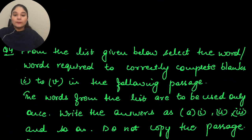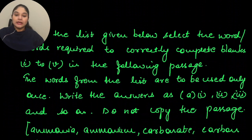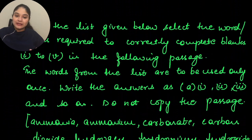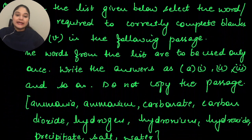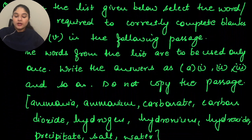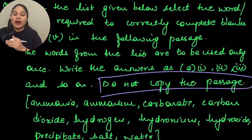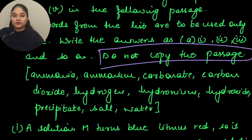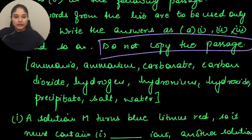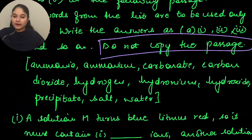From the list given below, select the word or words required to correctly complete the blanks 1 to 5 in the following passage. Words are to be used only once. Write the answers as 1, 2, 3, and so on — do not copy the passage. Students, always read the entire question. The words given are: ammonia, ammonium carbonate, carbon dioxide, hydrogen, hydronium, hydroxide, precipitate, salt, and water.